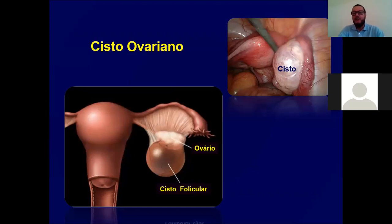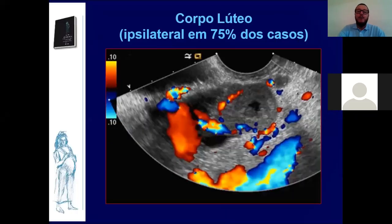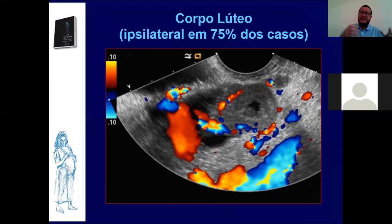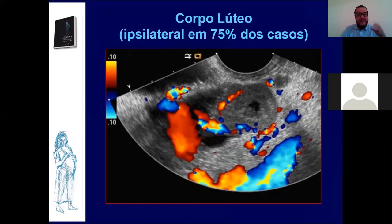Se você tiver um cisto de ovário e o beta-HCG for negativo, você fecha o diagnóstico diferencial. O corpo lúteo está ipsilateral em 75% dos casos — um pouco vascularizado. Você vai ter um corpo lúteo no ovário com grande quantidade de fluxo, avaliado pela dopplerfluxometria. Esse procedimento é um pouquinho mais sofisticado, mas é importante e fundamental passarmos essa informação para vocês.